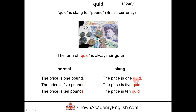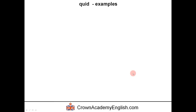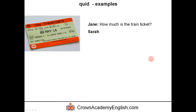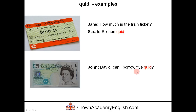John says, 'David, can I borrow five quid?' — referring to a five pound note. And David says, 'Yeah, sure, no problem.' Remember: quid means pound, and it's always in the singular form. That's the end of the lesson. Don't forget to check out our website, and here are some other videos which I recommend you watch.